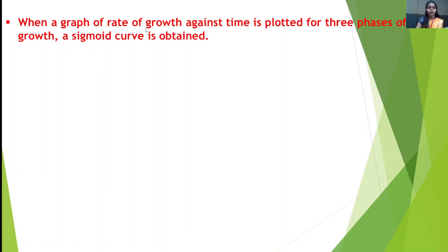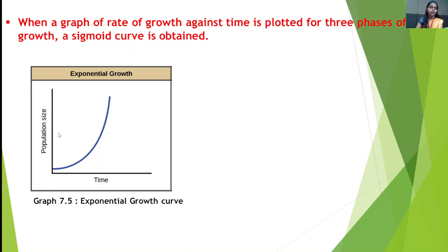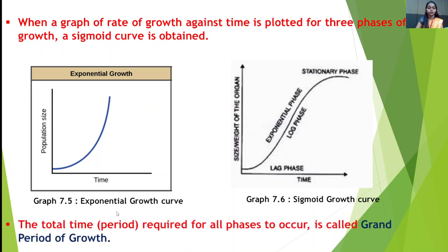When a graph of rate of growth against time is plotted for the three phases of growth, a sigmoid curve is obtained. It is S-shaped. The exponential growth curve has population size on the x-axis and time on the y-axis. The sigmoid growth curve shows size or weight of the organ on the x-axis and time on the y-axis, with Lag Phase, Log Phase and Stationary Phase. The total period required for all phases to occur is called the grand period of growth.